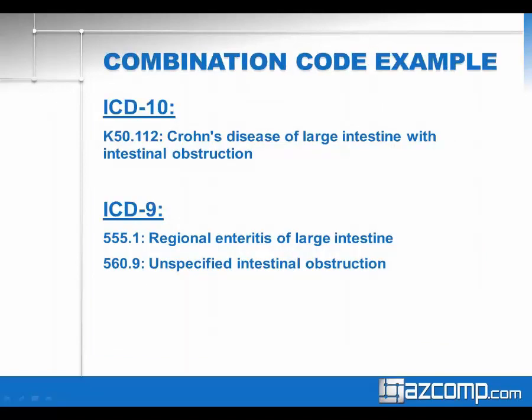Here's a specific example. In ICD-10, we have one code for Crohn's disease of the large intestine with intestinal obstruction — one code describing both the disease and the manifestation. In ICD-9, we would have had a primary code for regional enteritis of large intestine and then a secondary code for unspecified intestinal obstruction. Before we used two codes; today we would use one code under the combination codes.